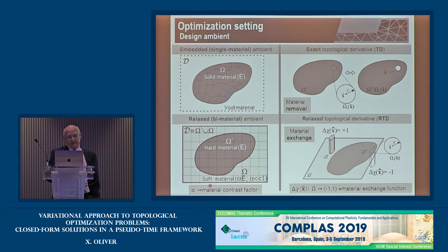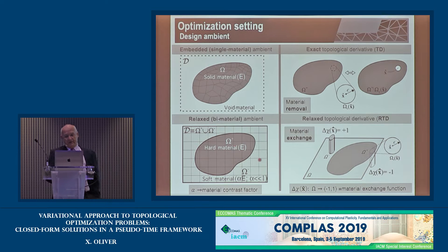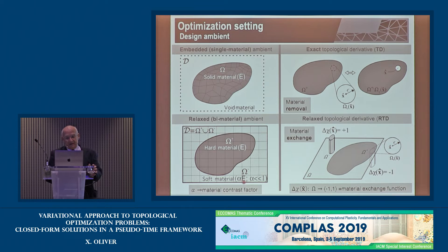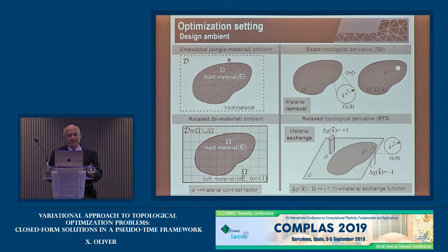On the other hand, we also consider a two-material relaxed ambient, where the hard material occupies a domain omega plus, characterized by certain elastic properties (Young's modulus and others), while the remaining domain contains a very soft material, introduced via a scaling factor called the material contrast factor alpha — much smaller than one but greater than zero. As alpha becomes small enough, we approach the single-material situation, but there are strong consequences for how we proceed.